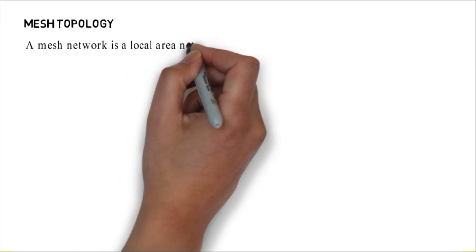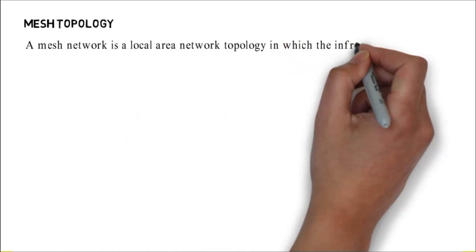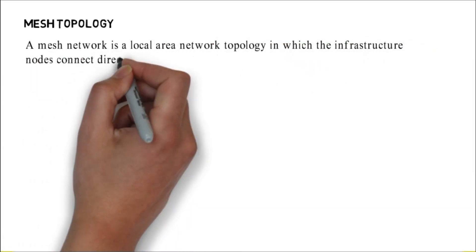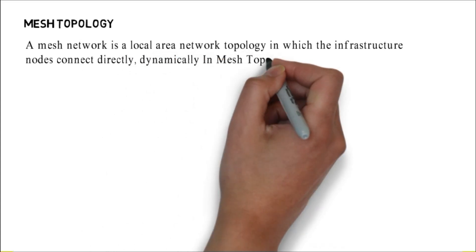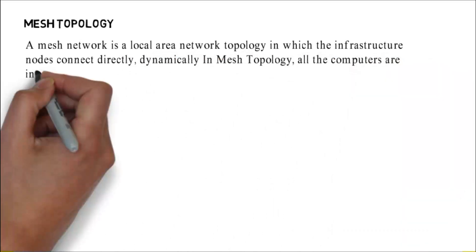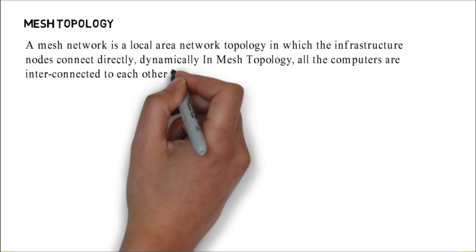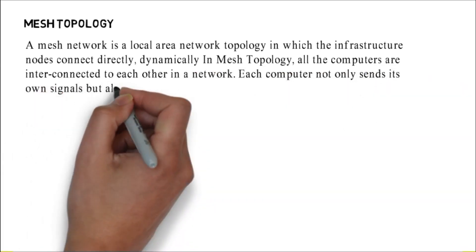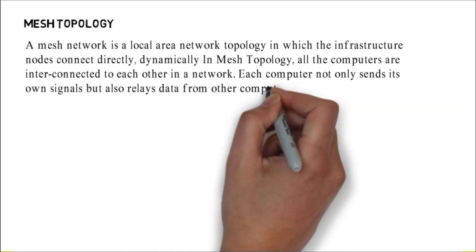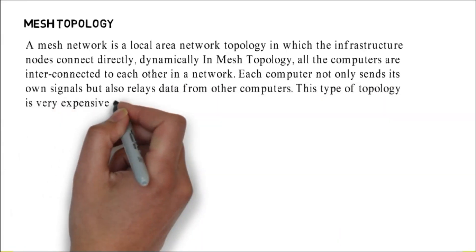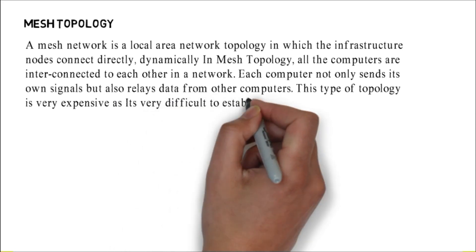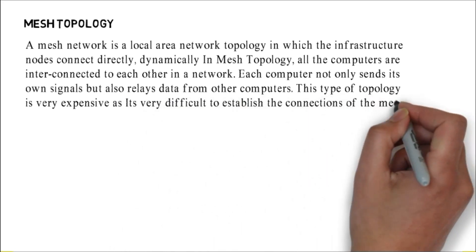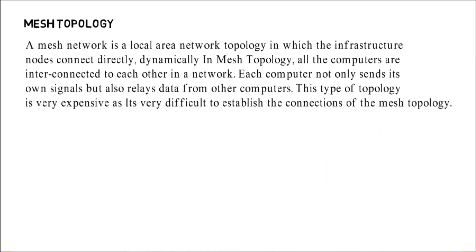Mesh topology. A mesh network is a local area network topology in which the infrastructure nodes connect directly, dynamically. In mesh topology, all the computers are interconnected to each other in a network. Each computer not only sends its own signals but also relays data from other computers. This type of topology is very expensive as it's very difficult to establish the connections of the mesh topology.